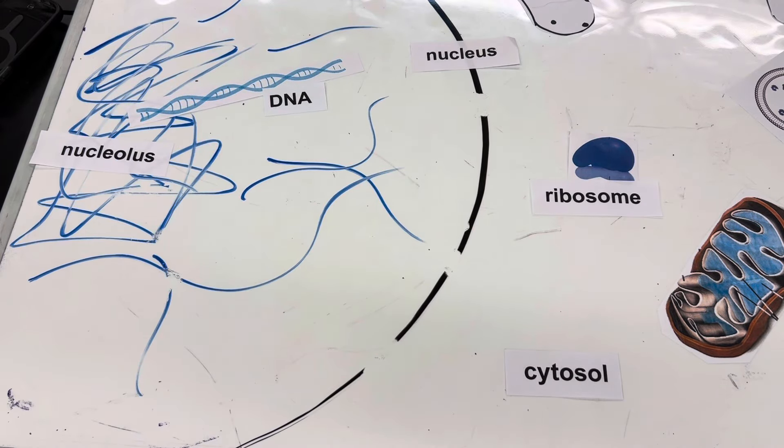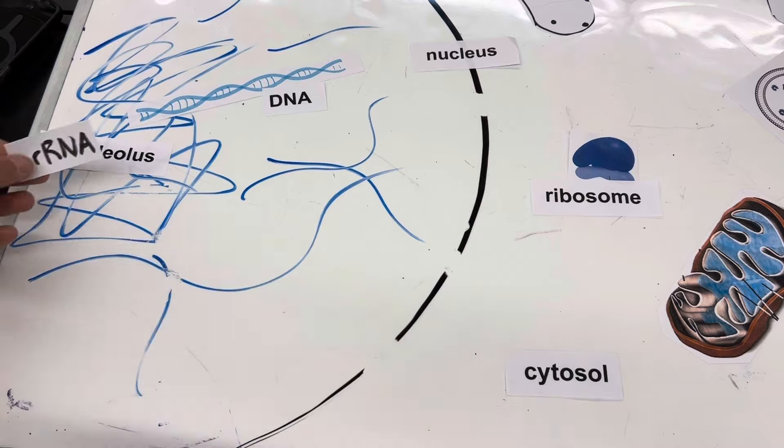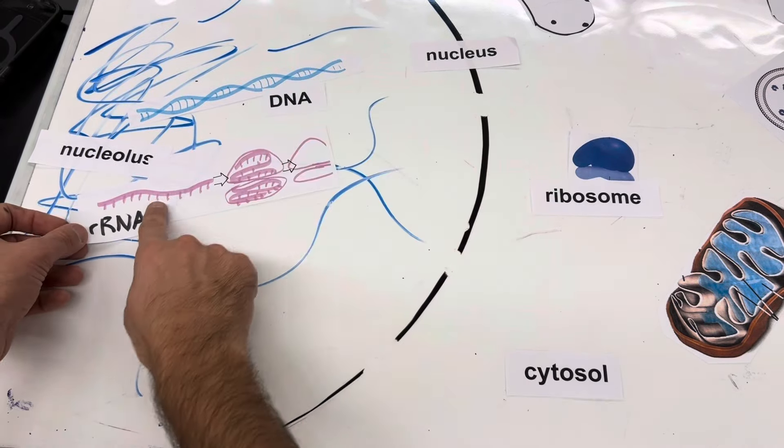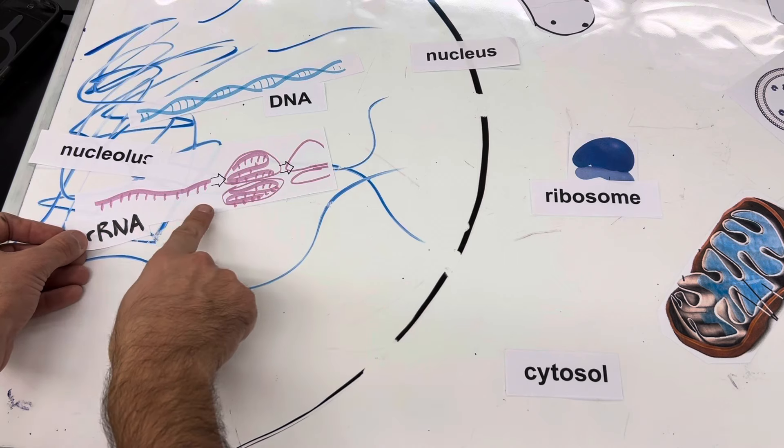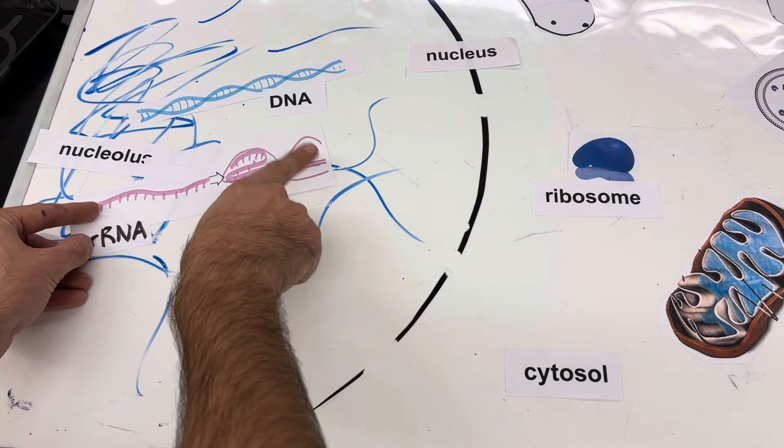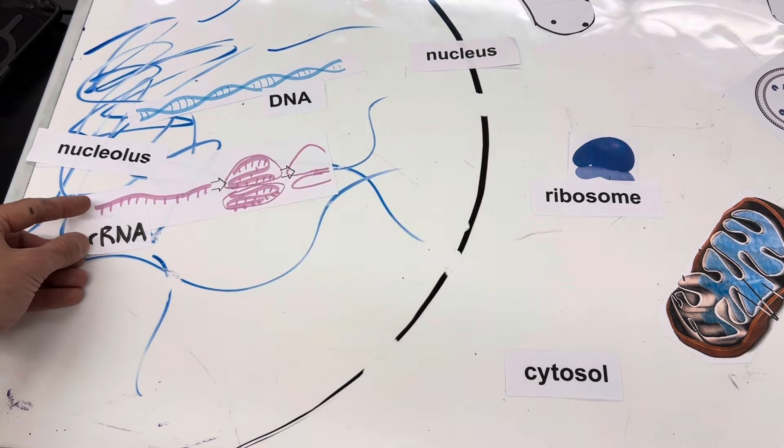Now, just a little bit of extra info in terms of how that's happening is the DNA is getting read to make this RNA molecule. Ribosomes are just made out of RNA. They fold kind of like a protein to make our ribosome right here.